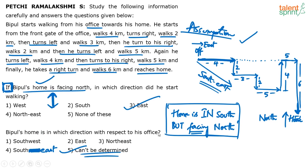This is like data sufficiency — when checking the second statement, forget the first statement. You cannot use data given in the first statement while answering or verifying the second. Same applies here. Bipul's home is in which direction with respect to his office? We do not know. If he started walking towards north, the whole thing would change. So cannot be determined is the answer — option 5. Many of you went wrong because you considered data from the first question while answering the second, which is a gross error.